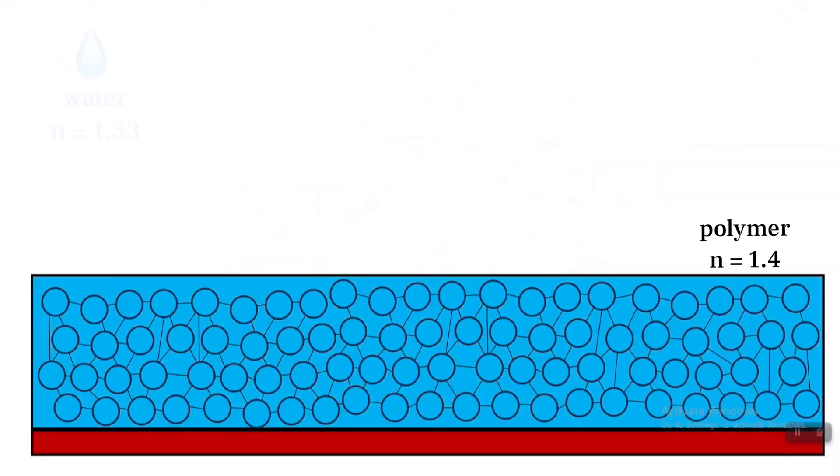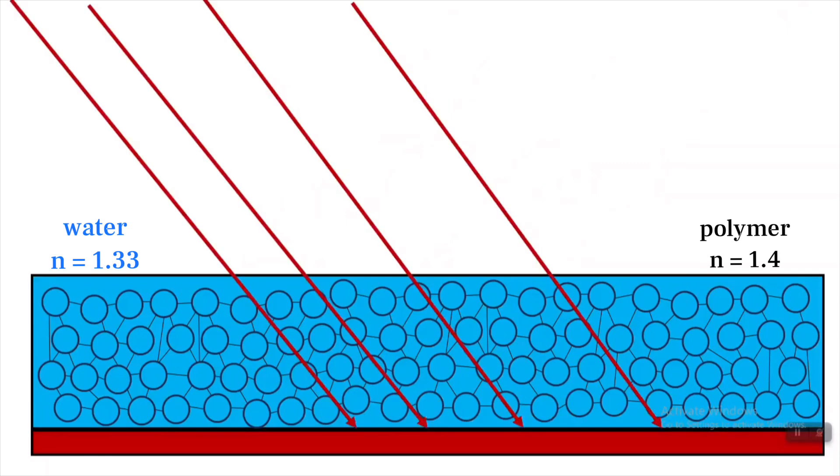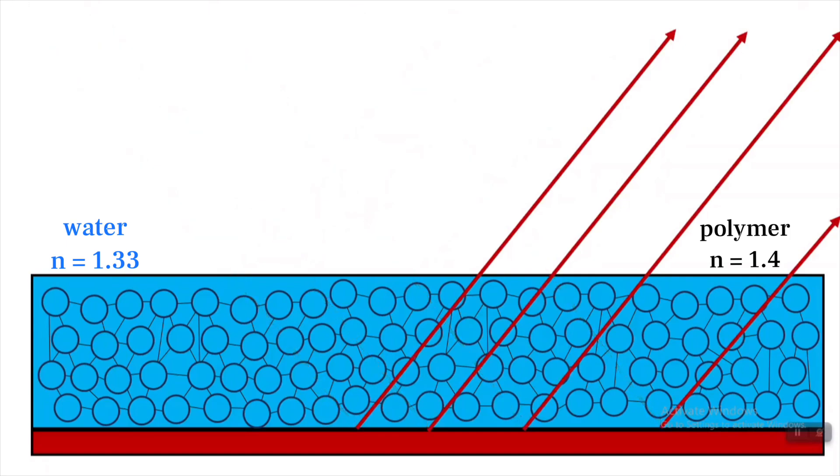However, the air pockets get filled with water when it's added. Because the index of refraction of water and the polymer are very close, light doesn't get scattered. In this case, the polymer-water interface becomes transparent and the colors beneath can be seen.